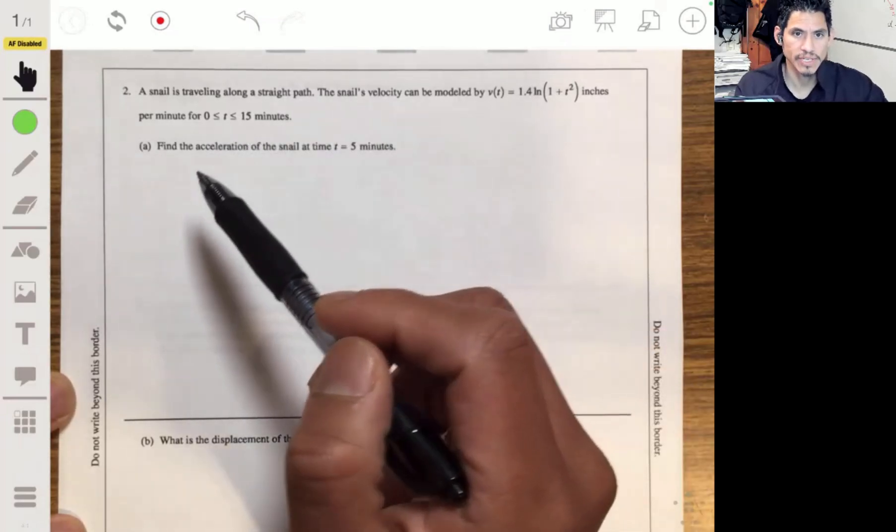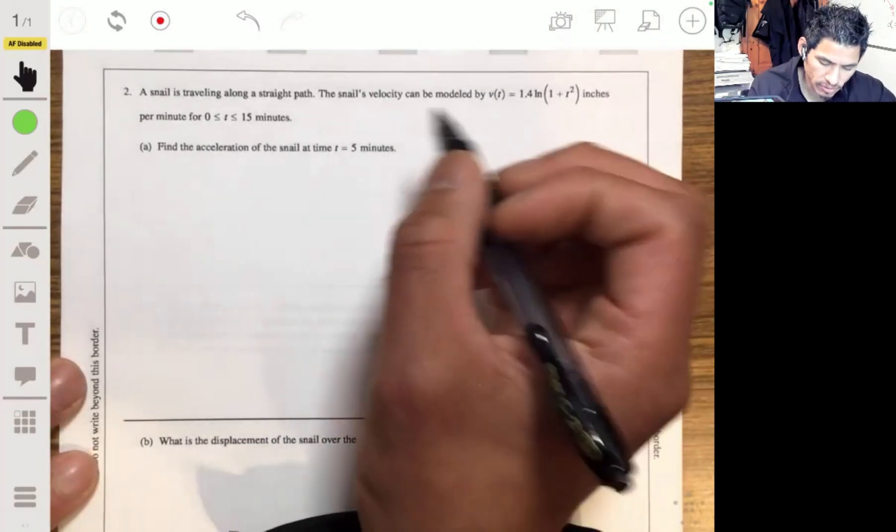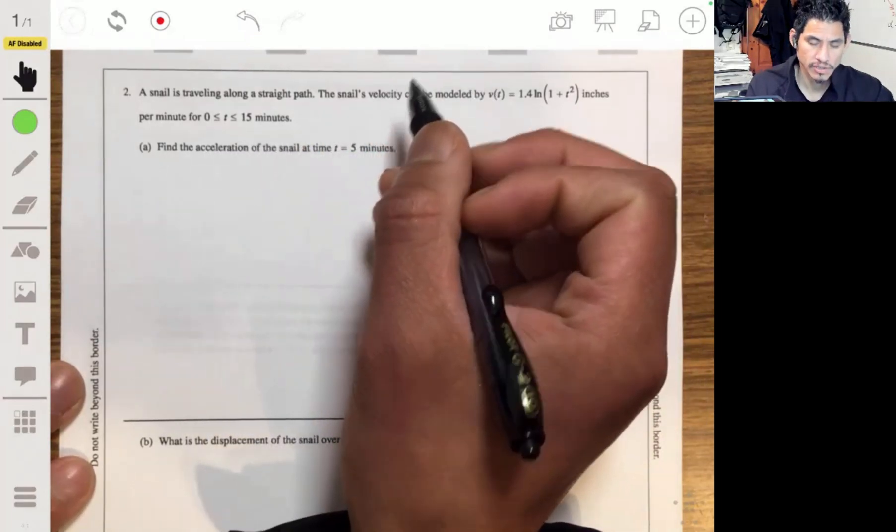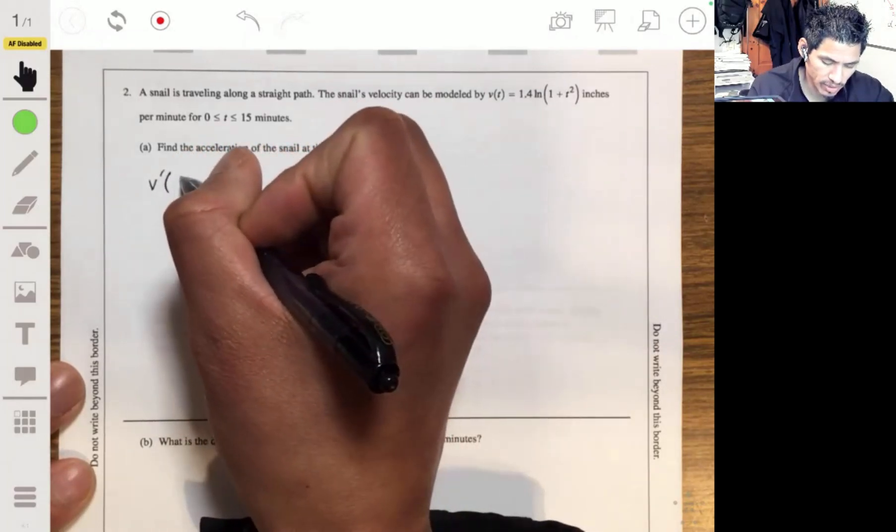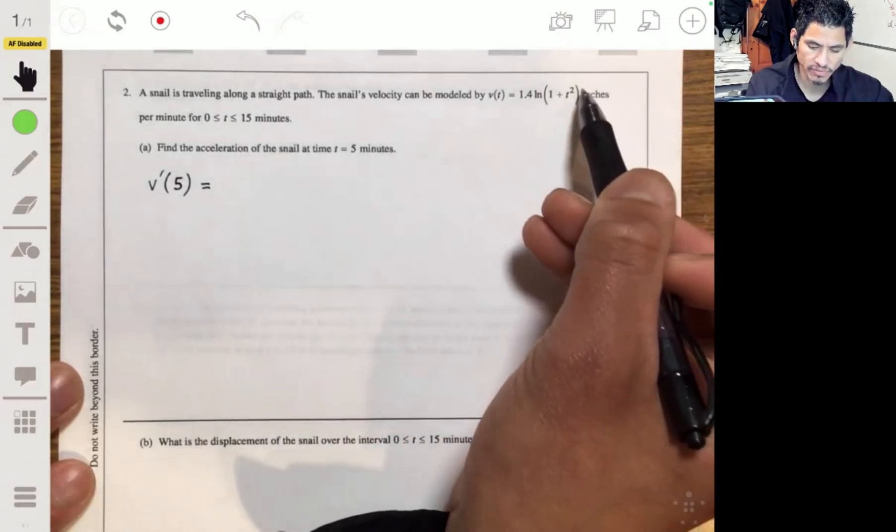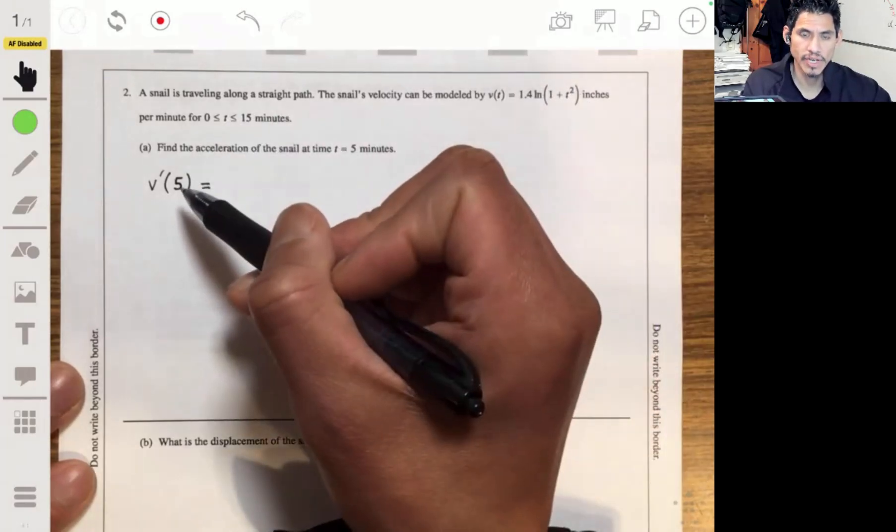Part A, we have to find acceleration of the snail at time t equals 5 minutes. Let's remember that acceleration is the derivative of velocity, so you're essentially just finding v'(5). You're going to just take the derivative of this equation and then evaluate it for 5.